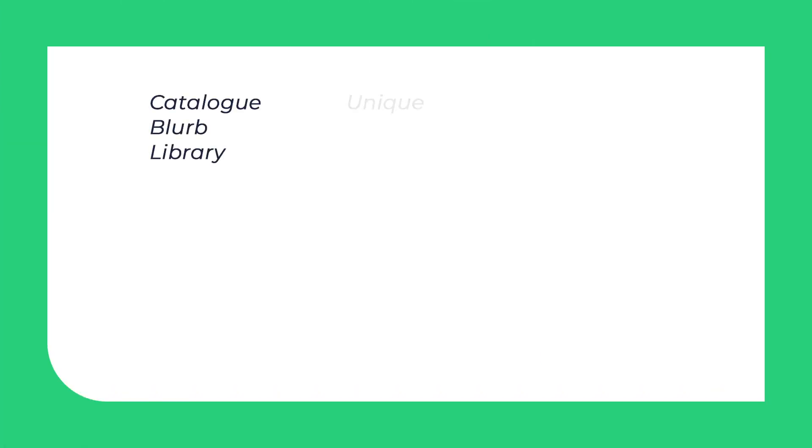Let's start with an easy thing to warm you up a little bit. Can you match the words from our topic vocabulary to the correct sentences and fill in the gaps? Here are the words: catalogue, blurb, library, unique, genre, touching, unoriginal, captivating.